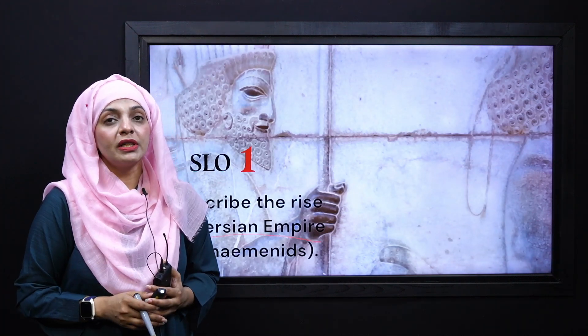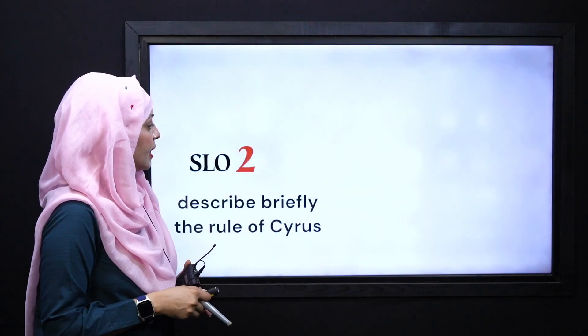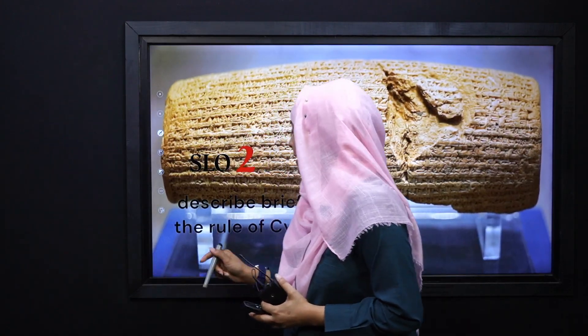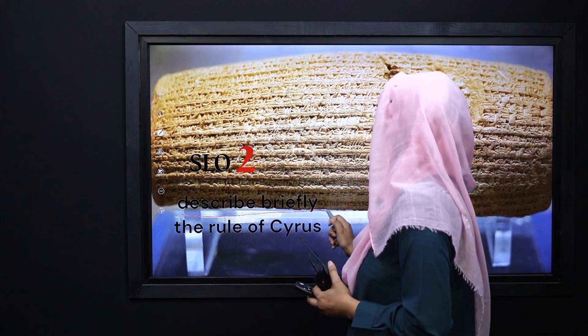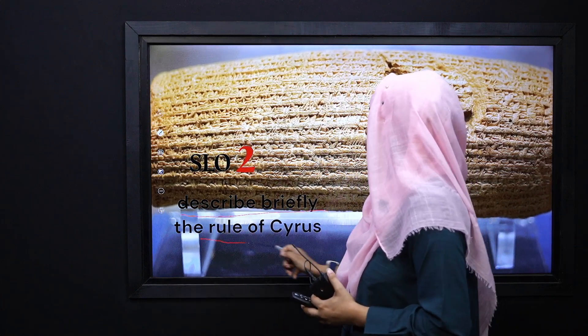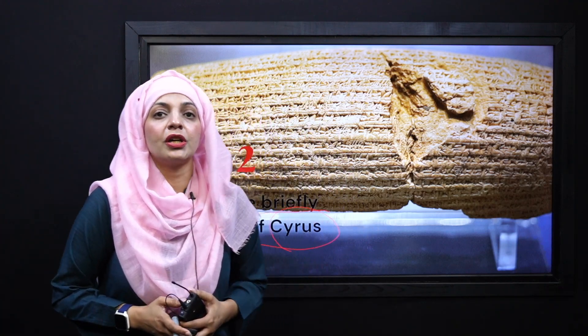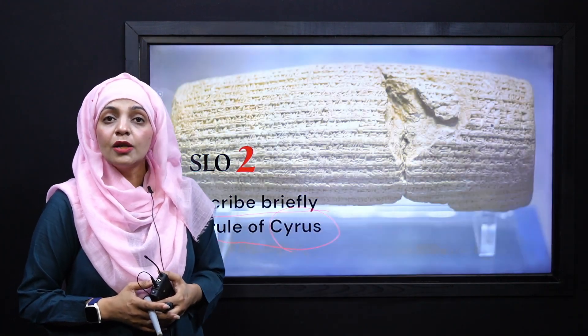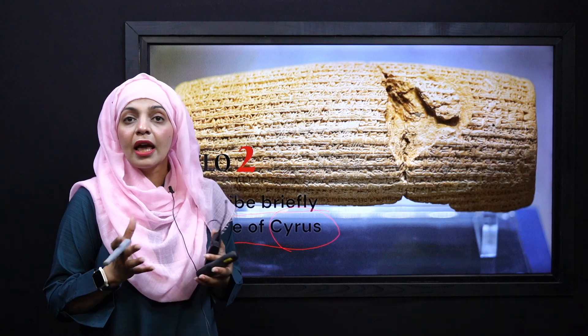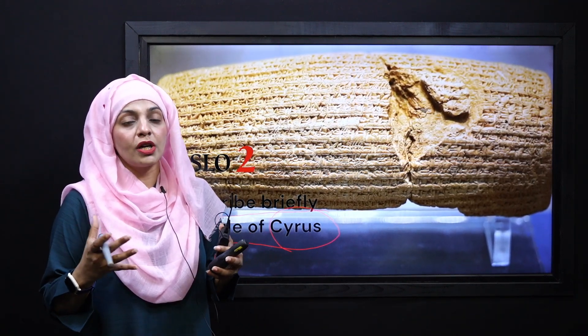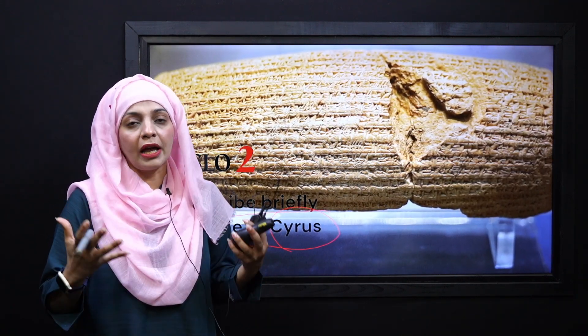And you will definitely enjoy it. Then comes Learning Outcome Number Two, in which we will be briefly describing the rule of Cyrus the Great, who was a very famous Persian leader and king — also known as Cyrus II. We will be reading about his life.